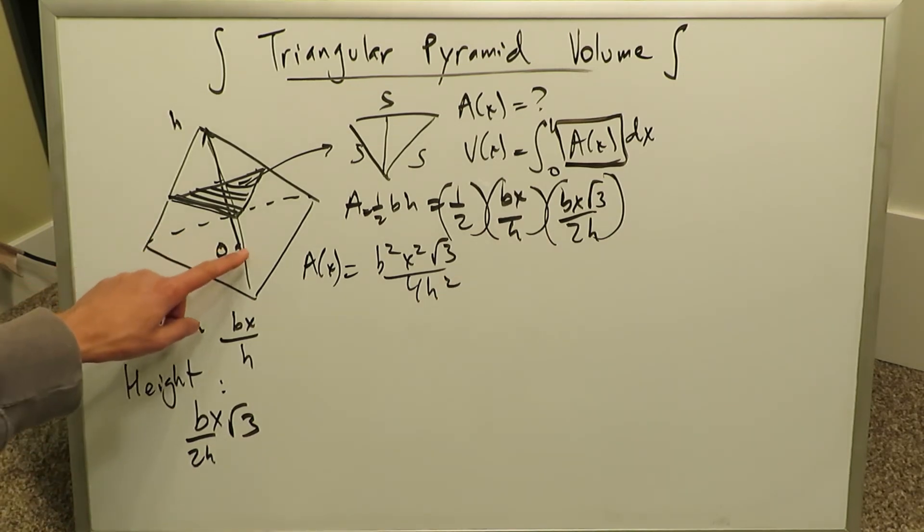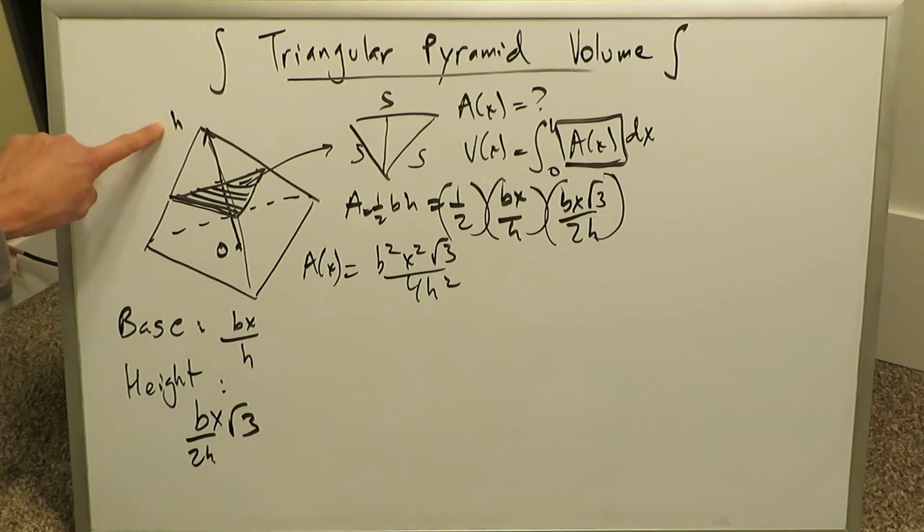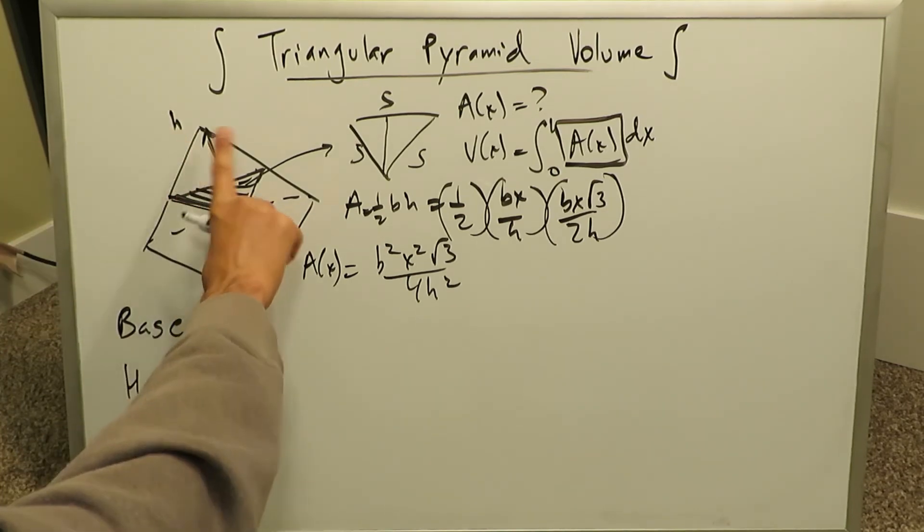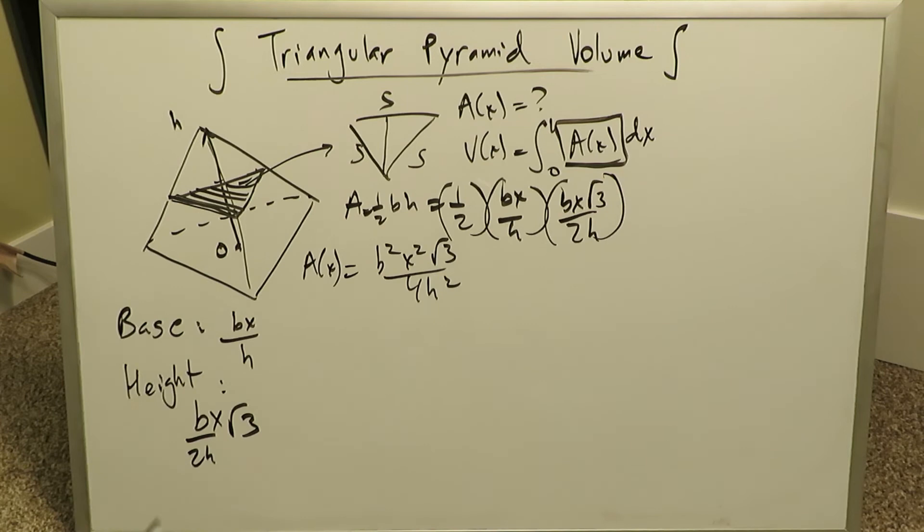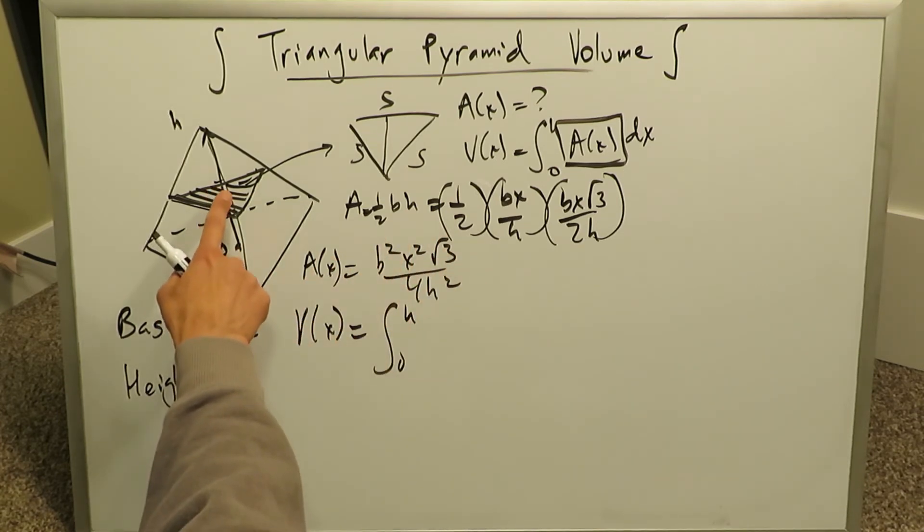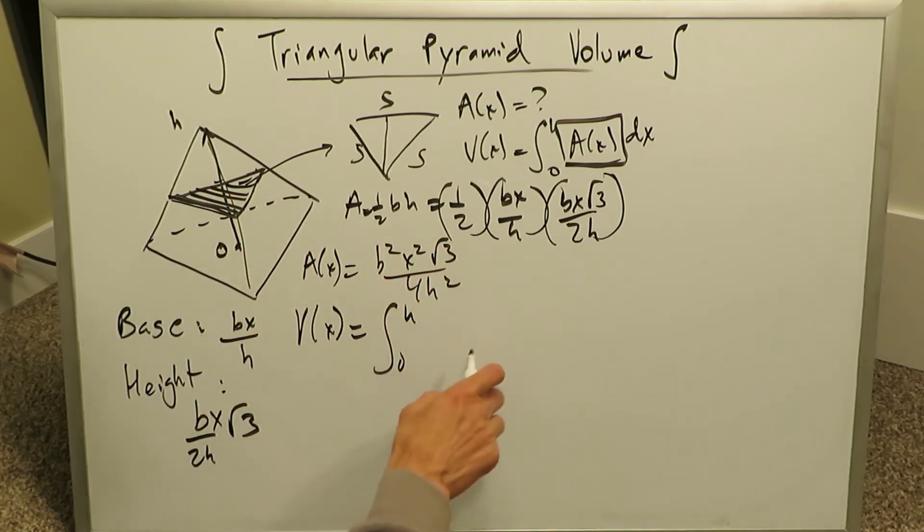Which will feed into this volume determination from a lower limit of 0 up to a higher limit of H. You could have even rotated this sideways. So you're looking along the X axis, which is what I'll do. So let's do the volume determination. We're looking from 0 to H. Here's my formula for the area of the cross-sectional triangular slice, which will feed through.